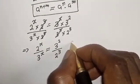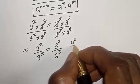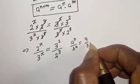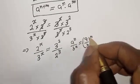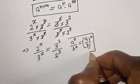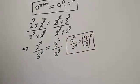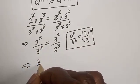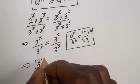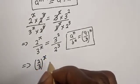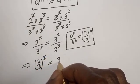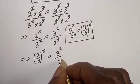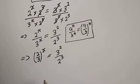If you have a raised to power n over b raised to power n, this is equal to a over b to the power of n. Applying this, the left side becomes 2 over 3 to the power of s, equal to 3 squared divided by 2 raised to power 3.